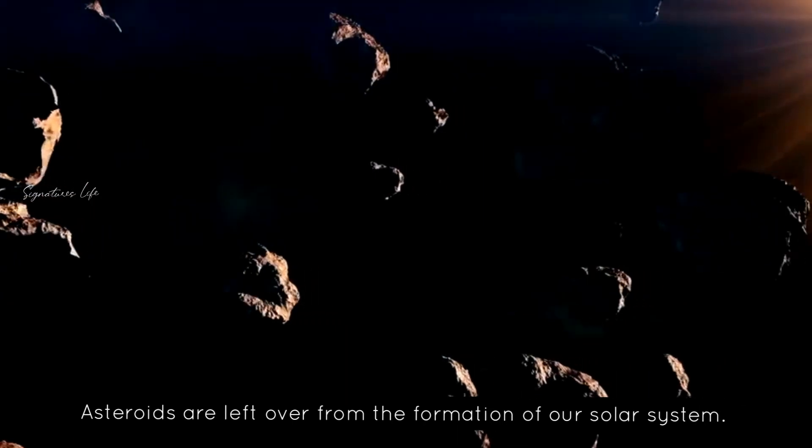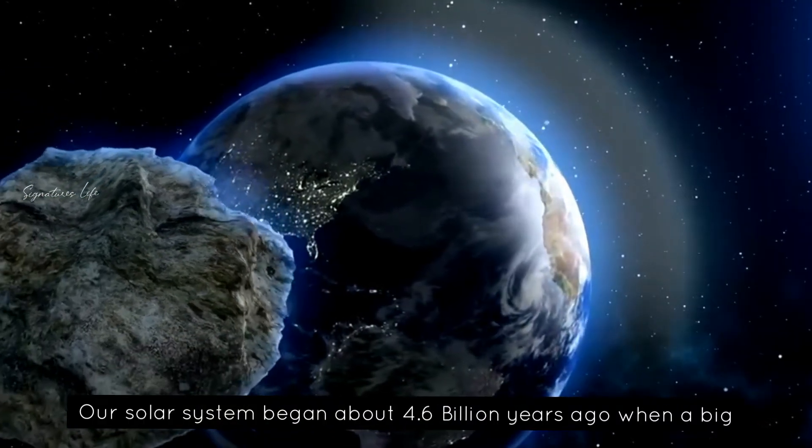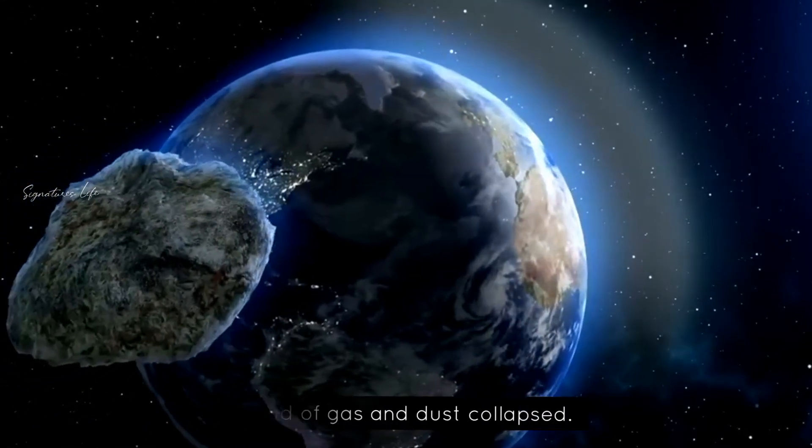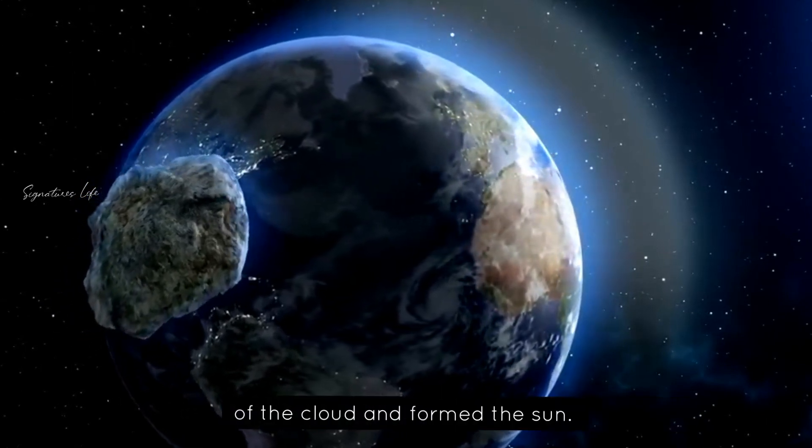Asteroids are left over from the formation of our solar system. Our solar system began about 4.6 billion years ago when a big cloud of gas and dust collapsed. When this happened, most of the material fell to the center of the cloud and formed the Sun.